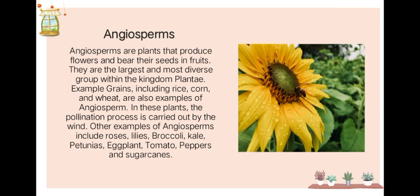Next, angiosperms — plants that produce flowers and bear their seeds in fruit. They are the largest and most diverse group within the kingdom Plantae. Examples include grains such as rice, corn, and wheat, where pollination is carried out by the wind. Other examples of angiosperms include roses, lilies, broccoli, eggplant, tomatoes, and peppers.